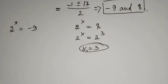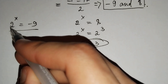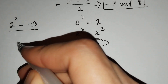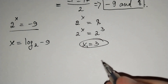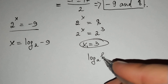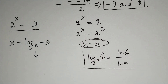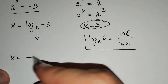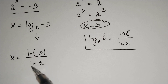Now for 2^x = −9: we know this has no solution in the real numbers, but in the complex numbers we can solve it. We write x = log base 2 of (−9). Using the change-of-base formula, log_a(b) = ln(b)/ln(a), so x = ln(−9) / ln(2).